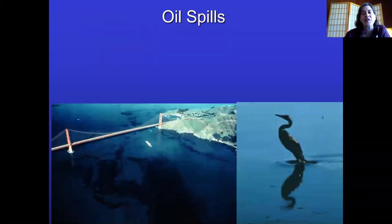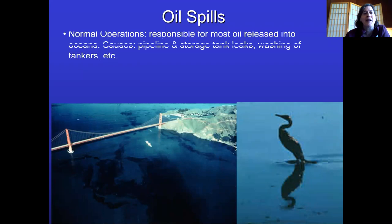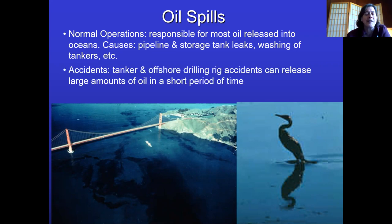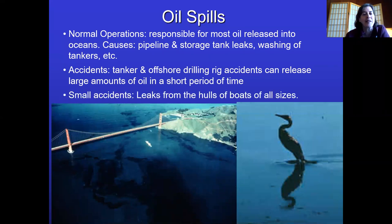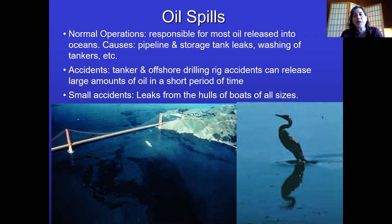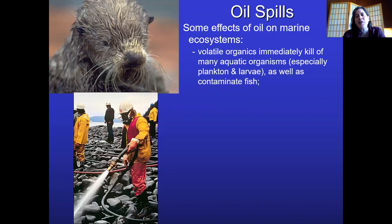Most oil that spills doesn't come from big disasters like the Exxon Valdez or the BP explosion — it actually comes from normal operations: pipeline leakage, storage tank leakage, tanker washing, and small day-to-day accidents. All the non-sailboats you see in the ocean have hulls full of oil to propel them, and saltwater is highly corrosive, so over time many boats start leaking. There have been many cases of this in Elliott Bay.